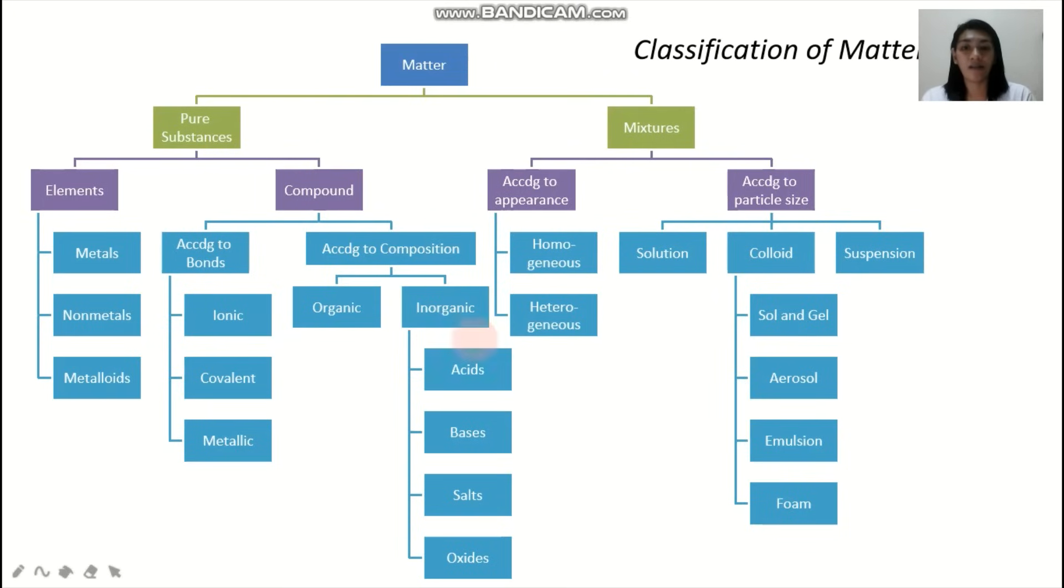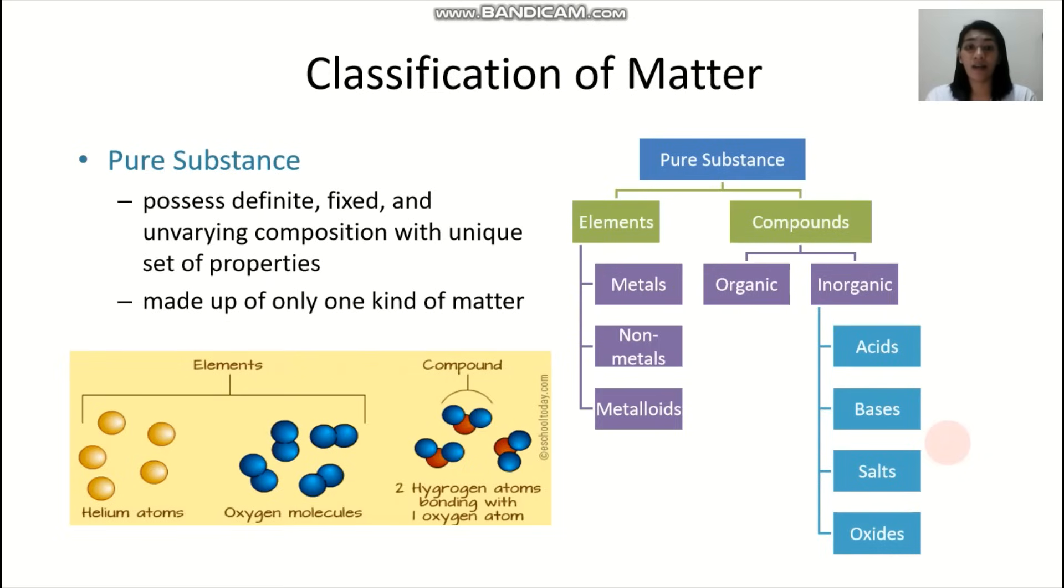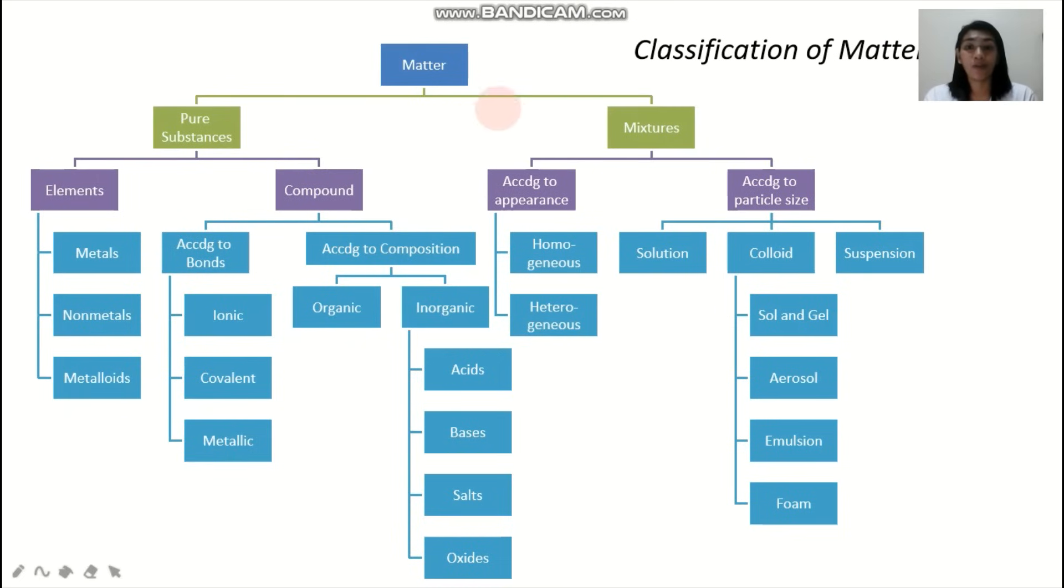Now this flowchart is an overview, or this actually summarizes the different types or classification of matter. So generally, you have two types or classifications of matter. We have the pure substances and you have your mixtures. Let's have the pure substances first.